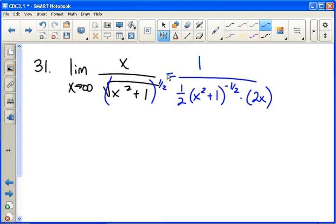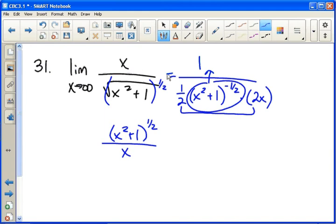One half times two x is just x, and this piece right here can move up top and we can change the exponent back to a one half, which if you look closely is actually just the reverse of what we started with. We had x on top and square root of x squared plus one on the bottom.